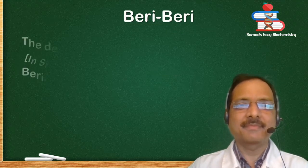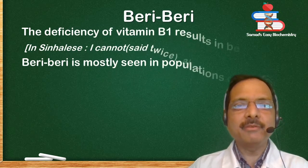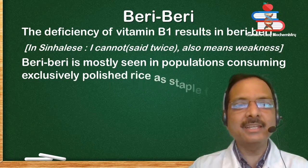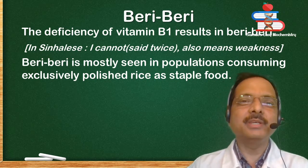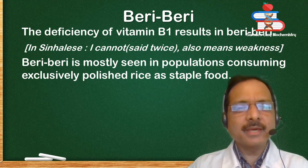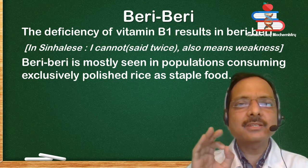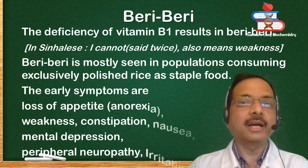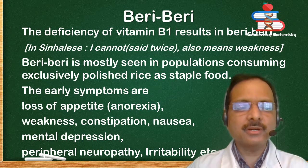Beriberi. The deficiency of vitamin B1, thiamine, results in beriberi. It is obtained from a Sinhalese word meaning weakness. Beriberi is mostly seen in populations consuming exclusively polished rice as a staple food. The early symptoms of beriberi are loss of appetite, anorexia, weakness, constipation, nausea, mental depression, peripheral neuropathy, irritability, etc.